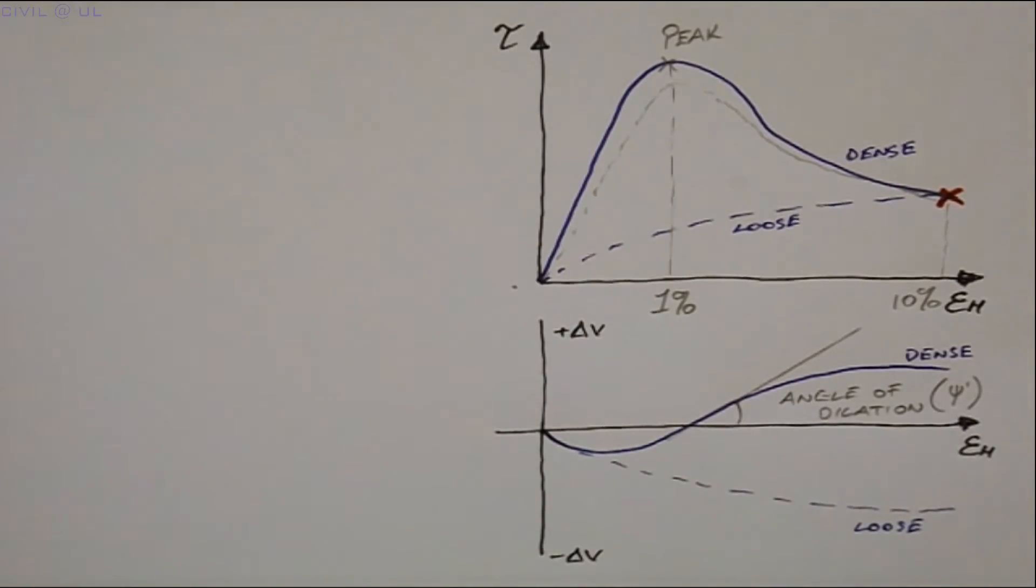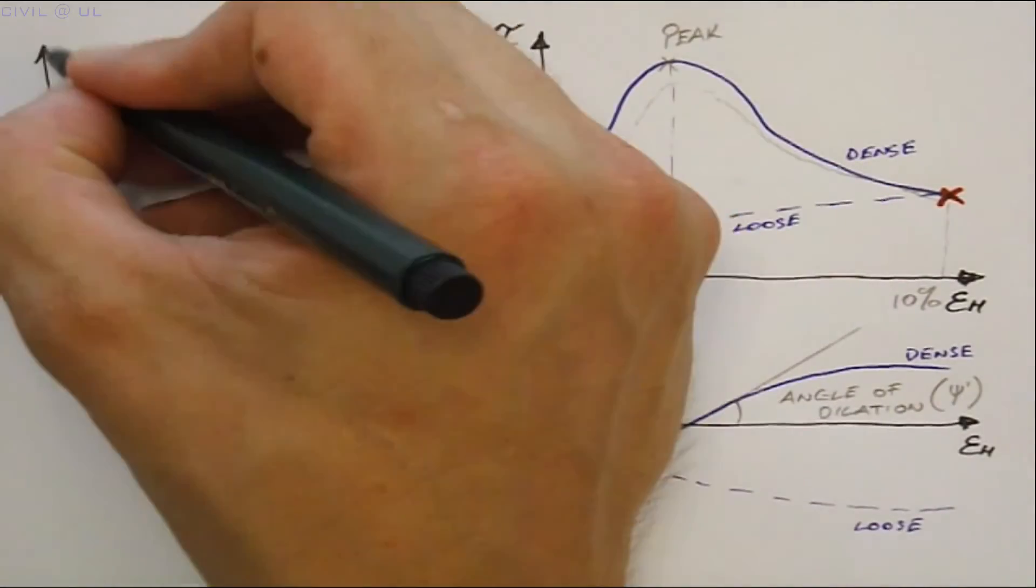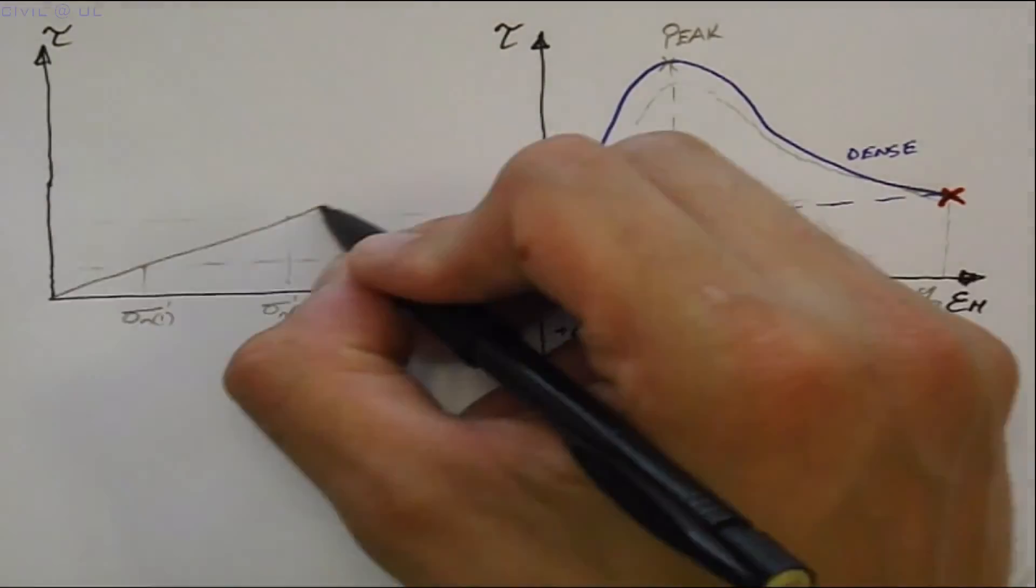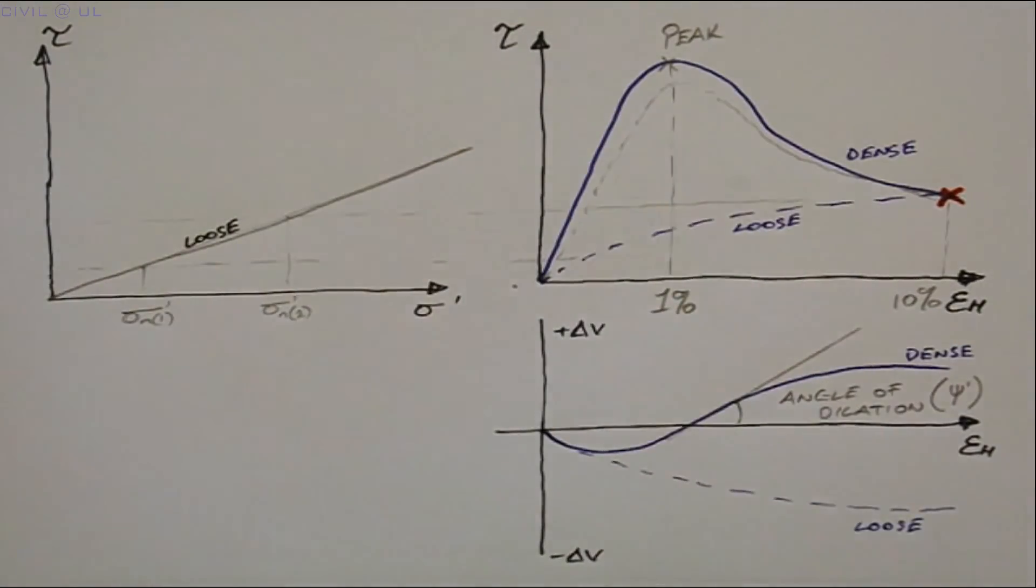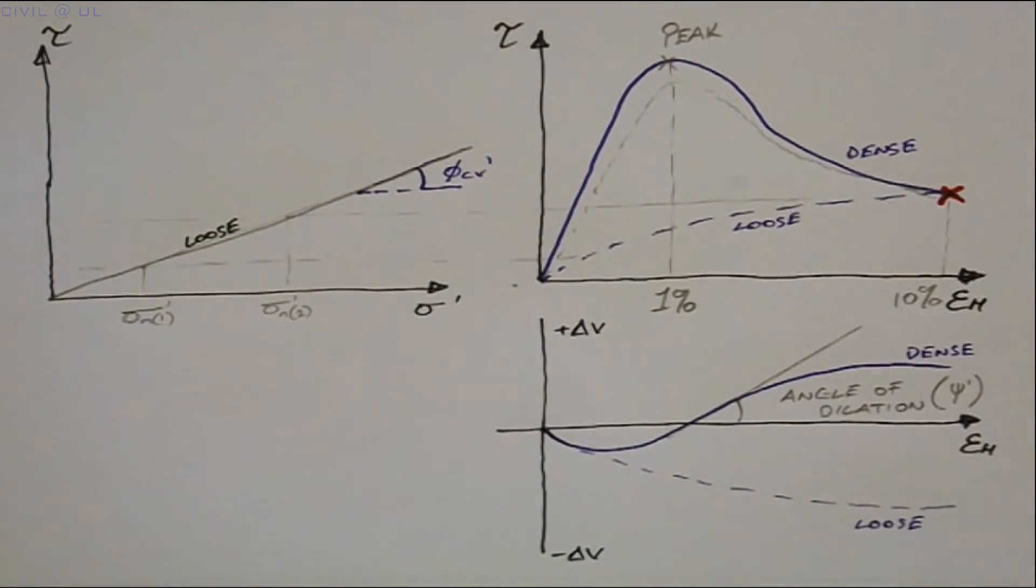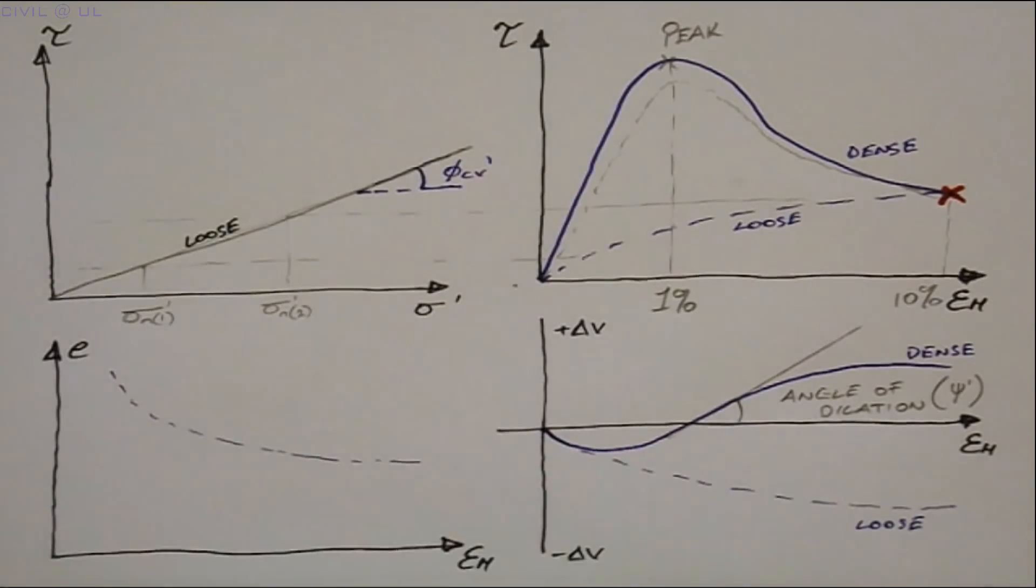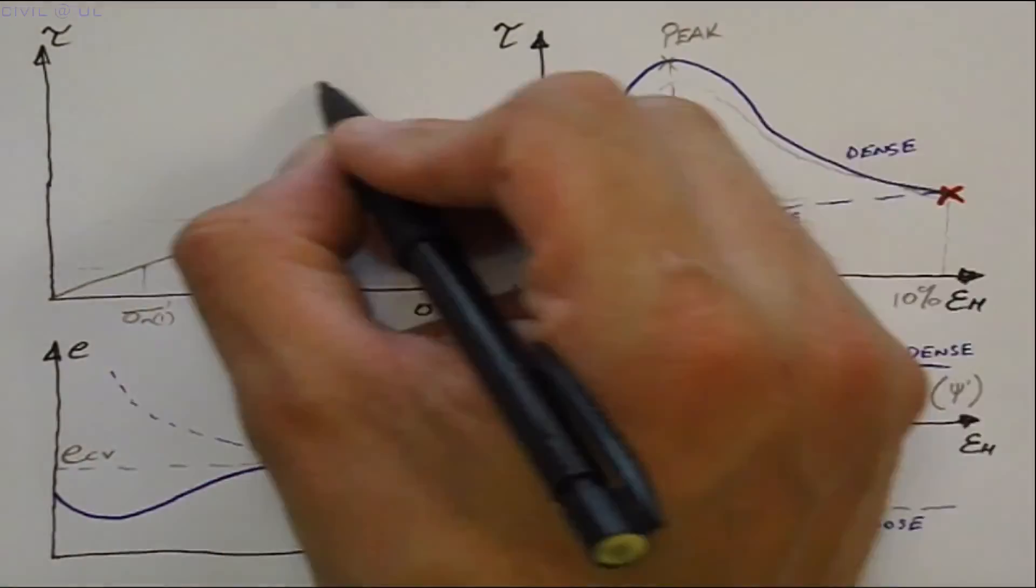The strength of loose soils can be looked upon as the purely frictional resistance of the soil, and it is a material property of the soil being tested. This is Phi-CV and is known as the constant volume angle of friction. So, whether a soil starts in a loose or dense configuration, they ultimately have the same strength after a certain strain.